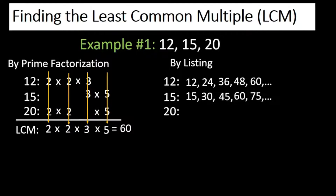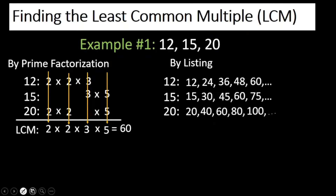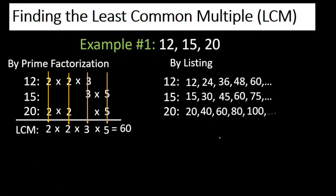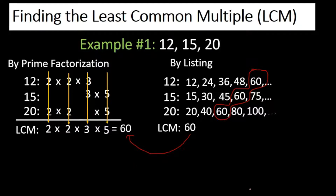For 20 we have: 20, 40, 60, 80, 100, and so on. If you notice, 60 is common among these three numbers — 12, 15, and 20. Therefore the least common multiple of 12, 15, and 20 is also 60. So we arrive at the same answer. It's up to you to choose which of these two methods you are comfortable using.